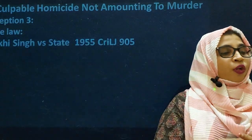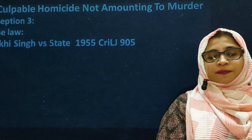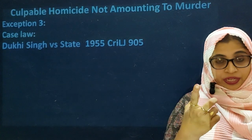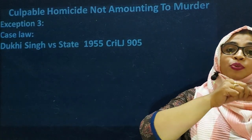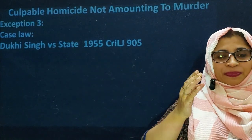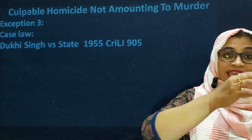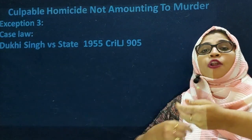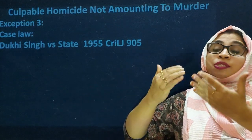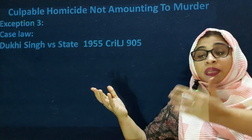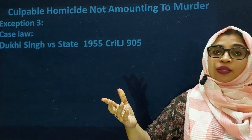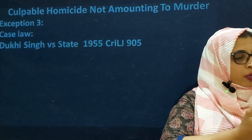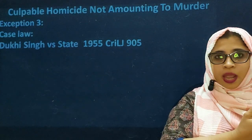The case law for Exception 3 is Dukhi Singh versus State. In this case, a police officer shot a fireman unintentionally — he actually wanted to shoot a thief who was running. The officer exceeded his power: he should have caught the thief, not shot him. He used an extreme level and shot the wrong party unintentionally. This case falls under the exceptions of murder but does not go to the general exceptions of the Indian Penal Code.